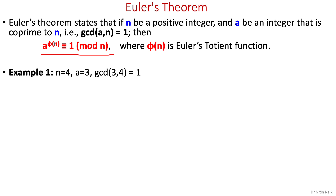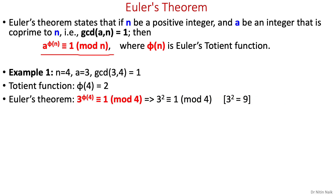Let's look at some examples. With n equals 4 and a equals 3, their GCD(3, 4) equals 1. The Totient function phi(4) is 2, which you can check in the table. Applying Euler's theorem: 3 to the power 2 is congruent to 1 mod 4. Placing the value gives 9 mod 4, which equals 1 — correct.